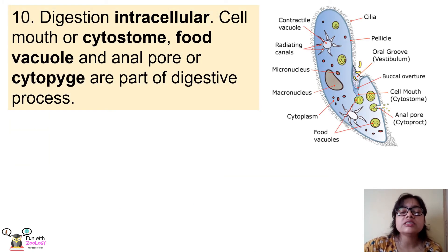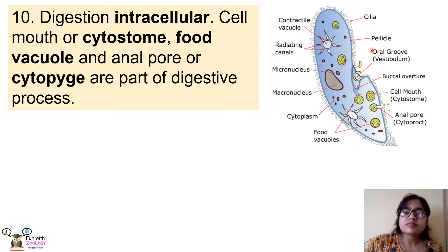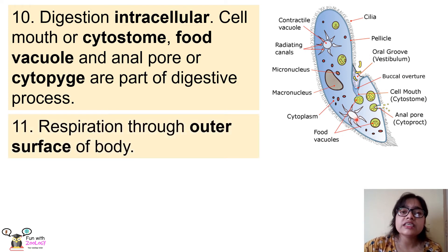The next point is about digestion. Since protozoans are made up of only one cell, digestion must occur within the cell — this is called intracellular digestion. For this, protozoans have different organelles: the cell mouth or cytostome, through which food particles enter the cell; the food vacuole, within which the food particle is digested; and the anal pore or cytoproct, through which undigested food matter exits the cell.